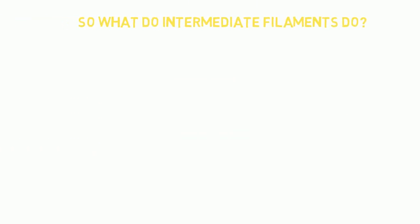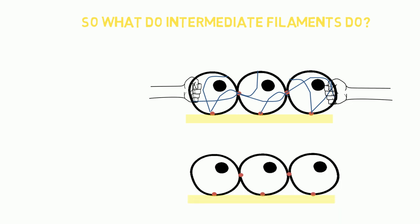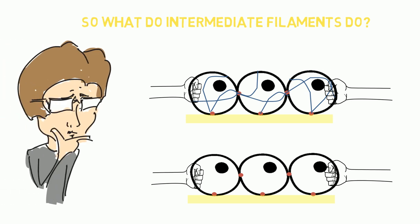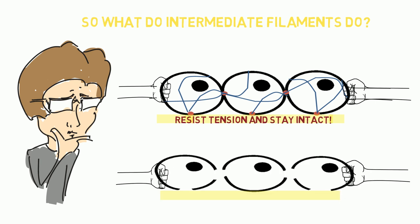So what do intermediate filaments do? Consider stretching cells that have intermediate filaments and cells that do not have intermediate filaments. Cells with the intermediate filaments can resist tension and remain intact, while cells that do not have the intermediate filaments would rupture.